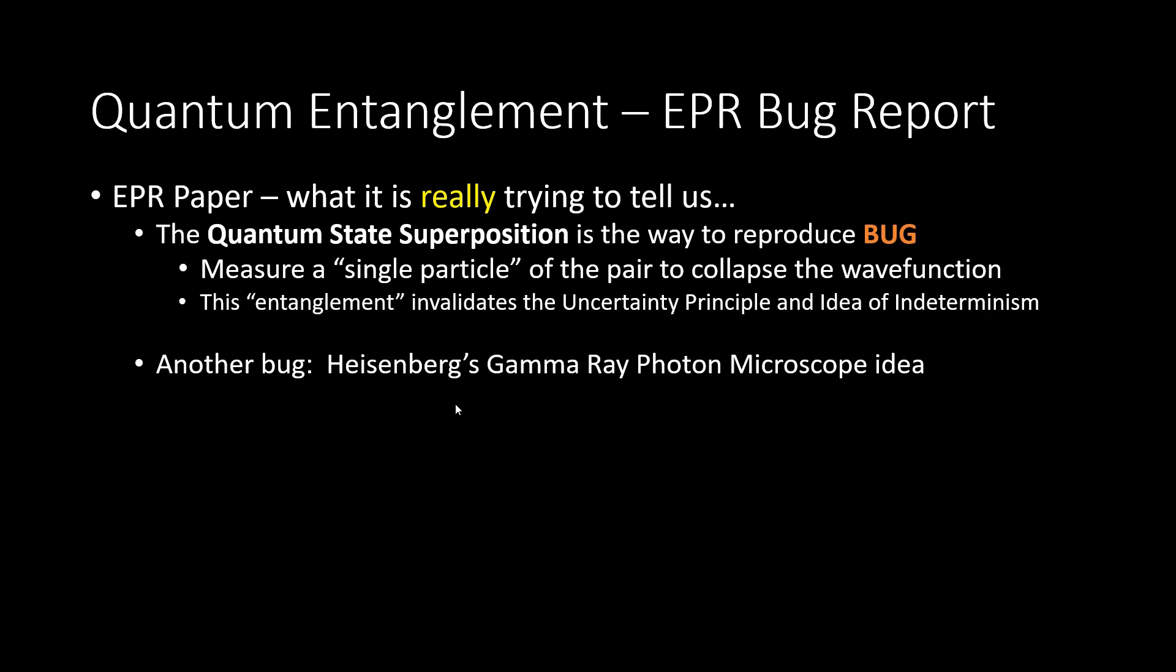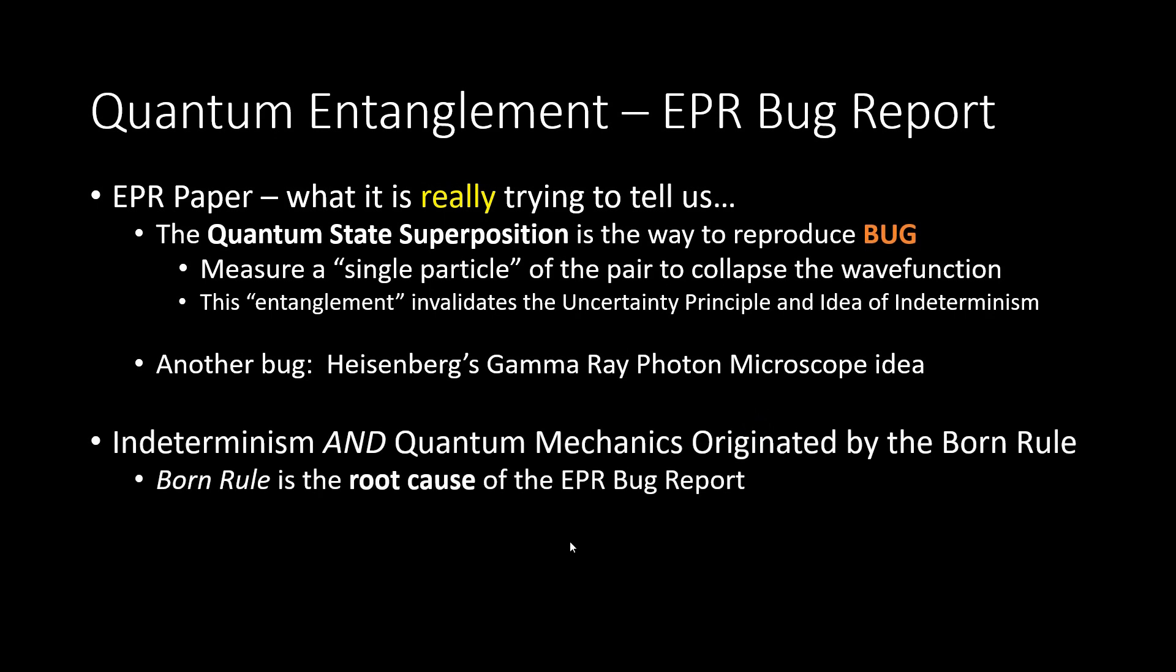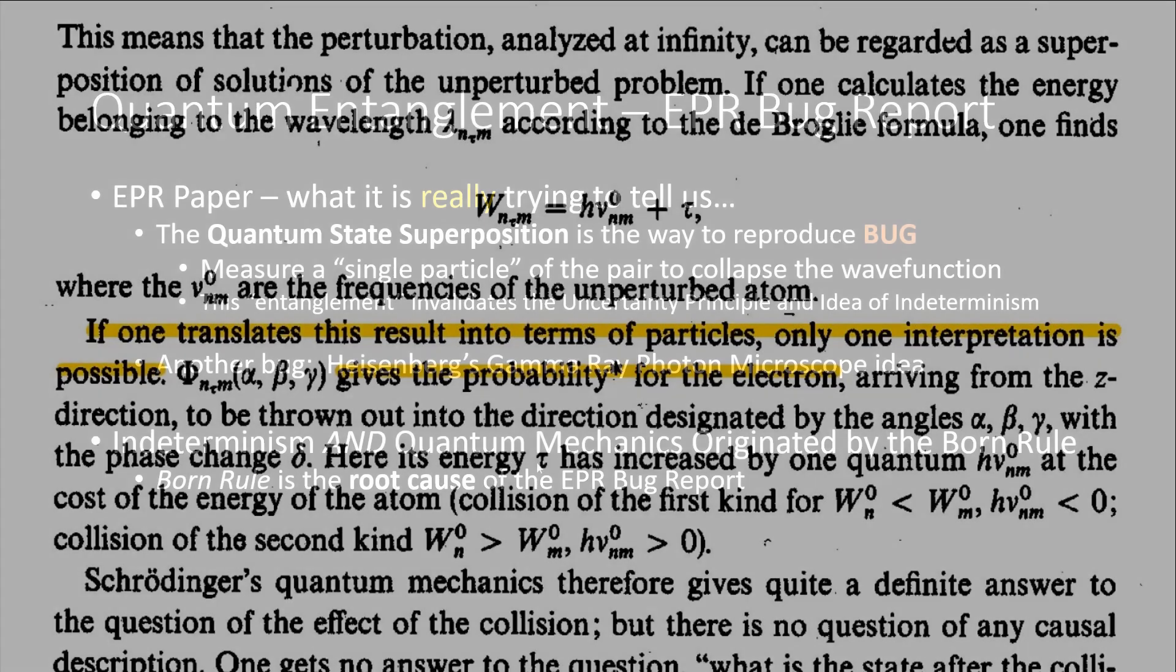And then in his paper, we see the high energy photon idea that is supposed to create indeterminism. But, since it doesn't do that, then that leaves us with the Born rule. This is where Max Born started the idea of indeterminism, and probability, and quantum mechanics.